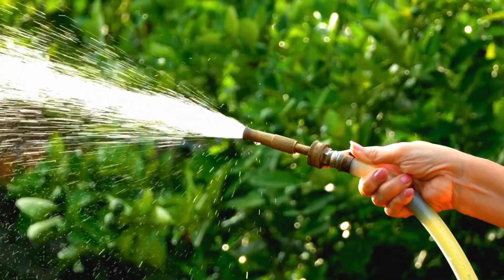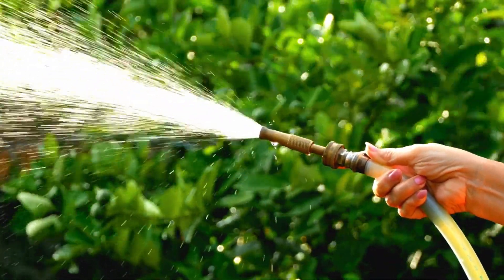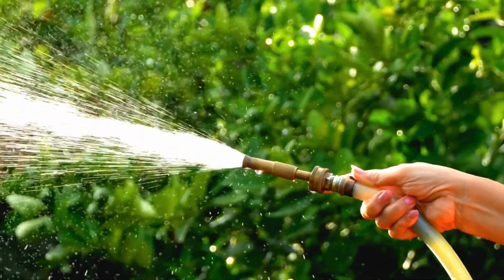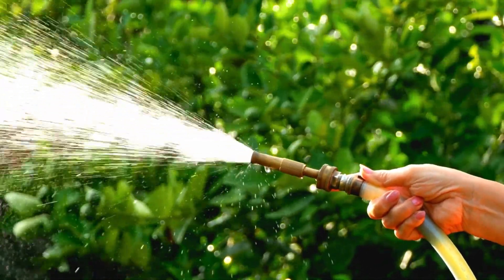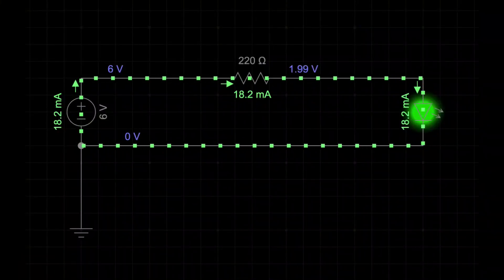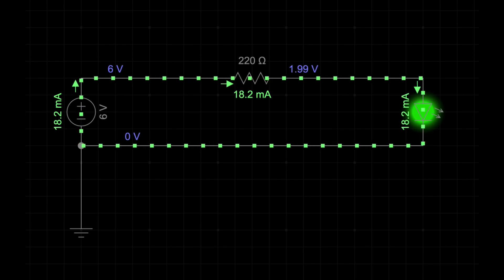Think of voltage as the pressure from a water pump in a garden hose. The higher the pressure, the more water flows through the hose. Similarly, the higher the voltage in an electrical circuit, the more current, or flow of electrons, we get.